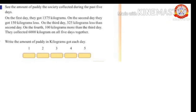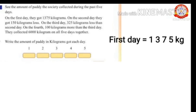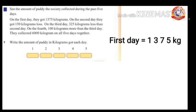First question: write the amount of paddy in kilograms got each day. How many kilograms of paddy were got on the first day? Yes, 1375 kilograms. On the second day they got 150 kilograms less, so to find out the amount of paddy got on the second day, subtract 150 kilograms from 1375 kilograms.